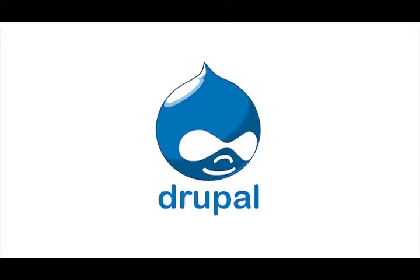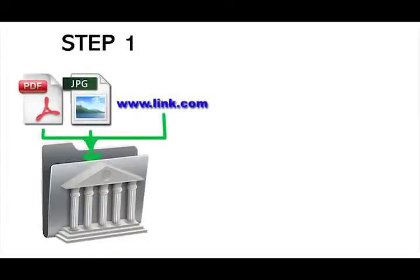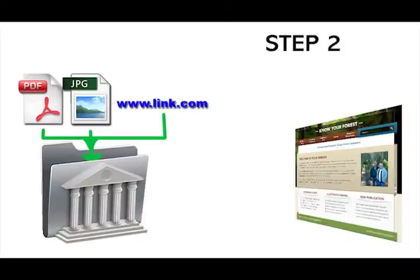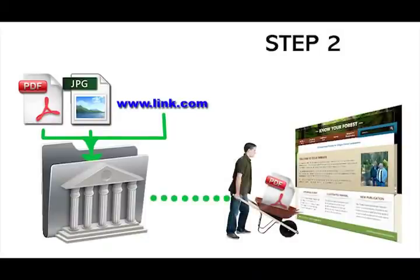For our purposes, Drupal works on a two-step process for adding content. Step one, you need to place an item in storage — that could be an image, a publication, a link, anything. Once that item is in storage, then step two, you call it out of storage whenever and wherever you want it. The reason Drupal does this is for efficiency of duplication.